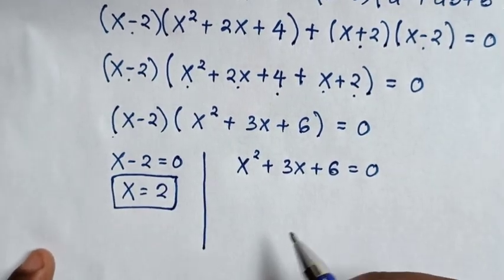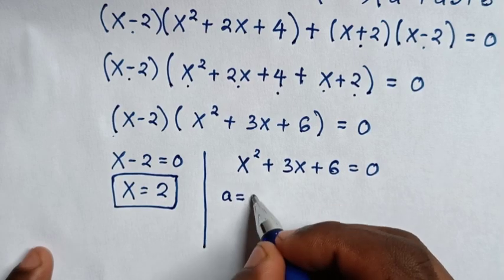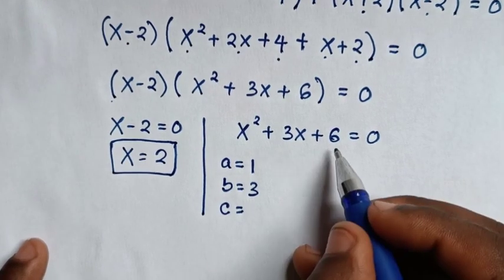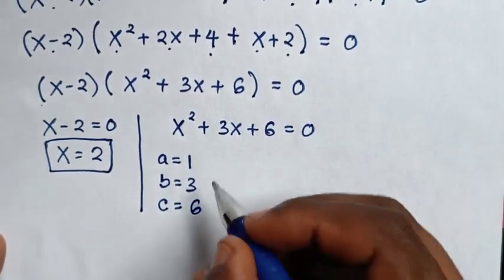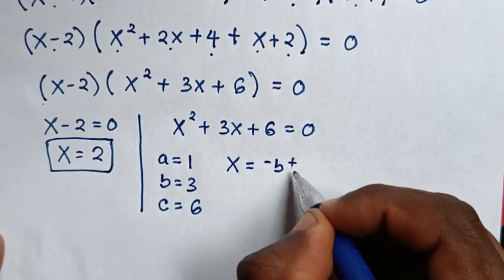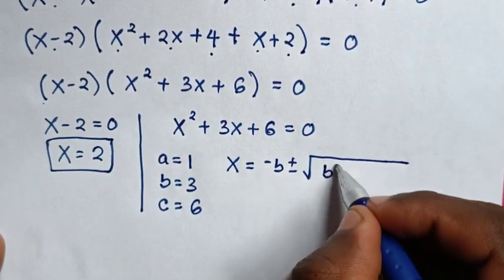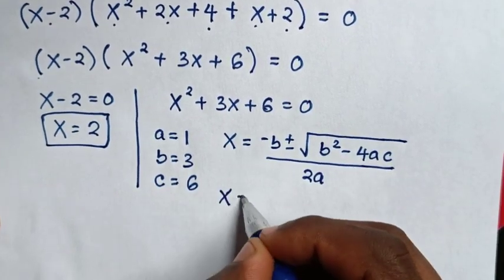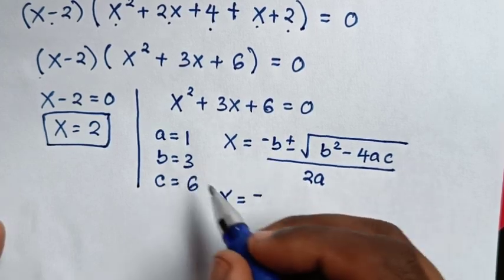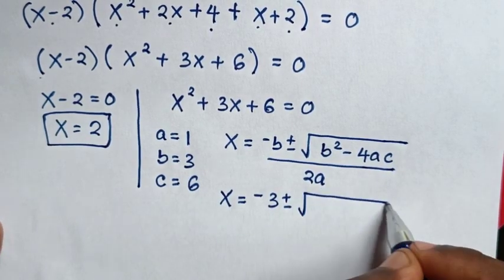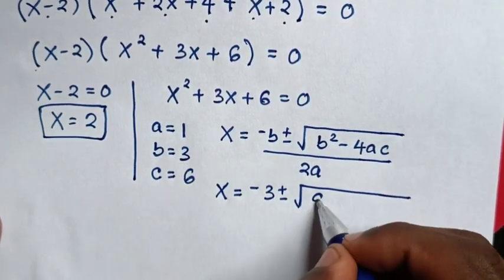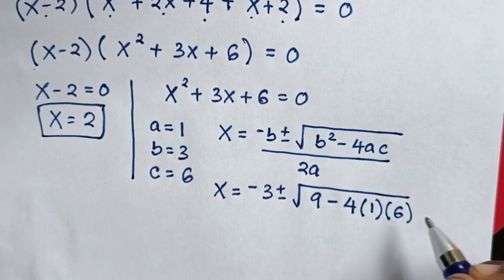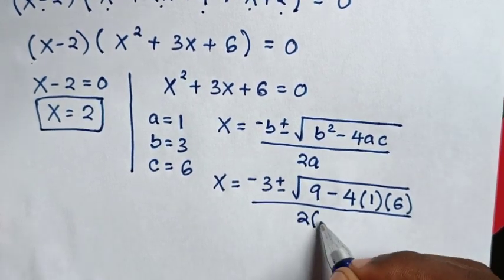To solve the quadratic equation x² + 3x + 6 = 0, where a = 1 (coefficient of x²), b = 3 (coefficient of x), and c = 6 (constant). Using the quadratic formula: x = (-b ± √(b² - 4ac)) / 2a, substituting gives x = (-3 ± √(9 - 4·1·6)) / (2·1).